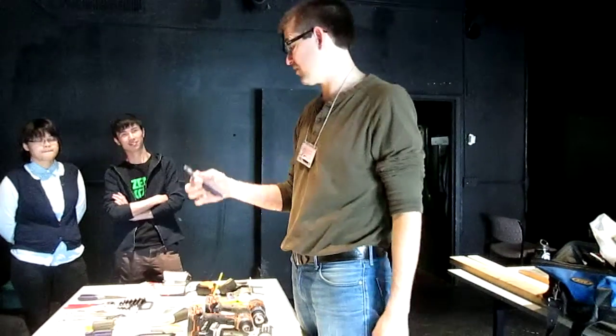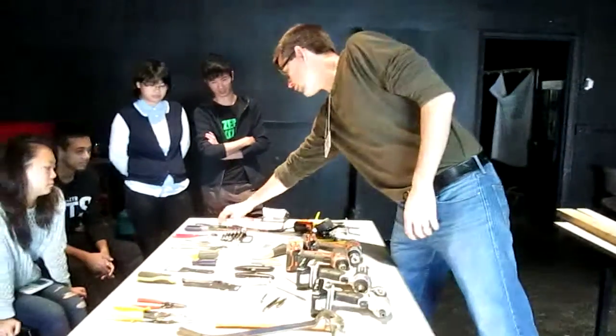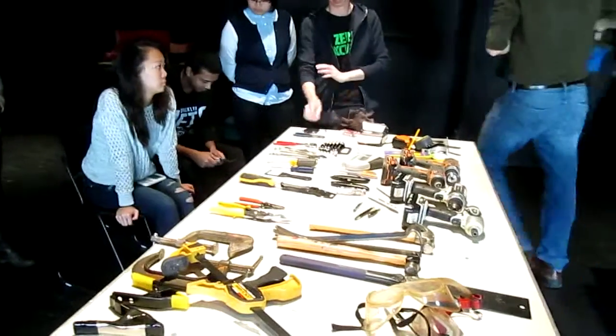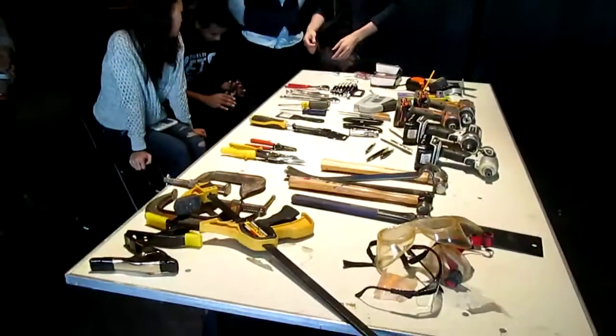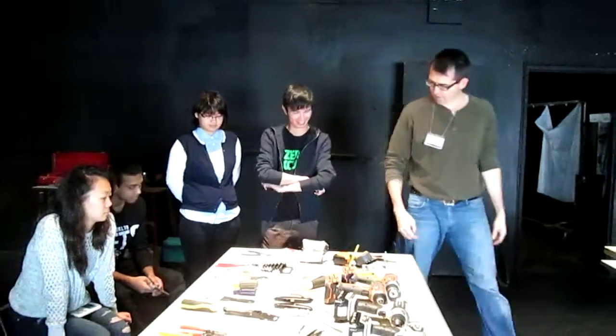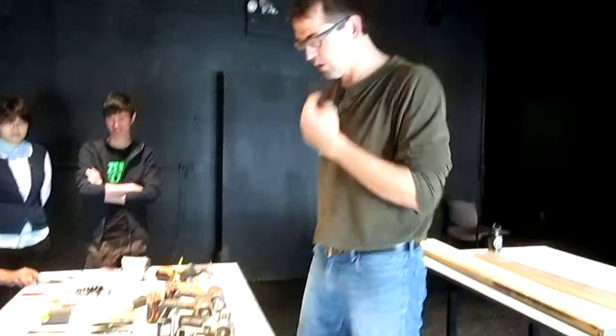A diagonal cutter, or dykes as they're called. Someone might ask for a pair of dykes. That's for cutting wire, cutting thin metal. We use those quite a bit.